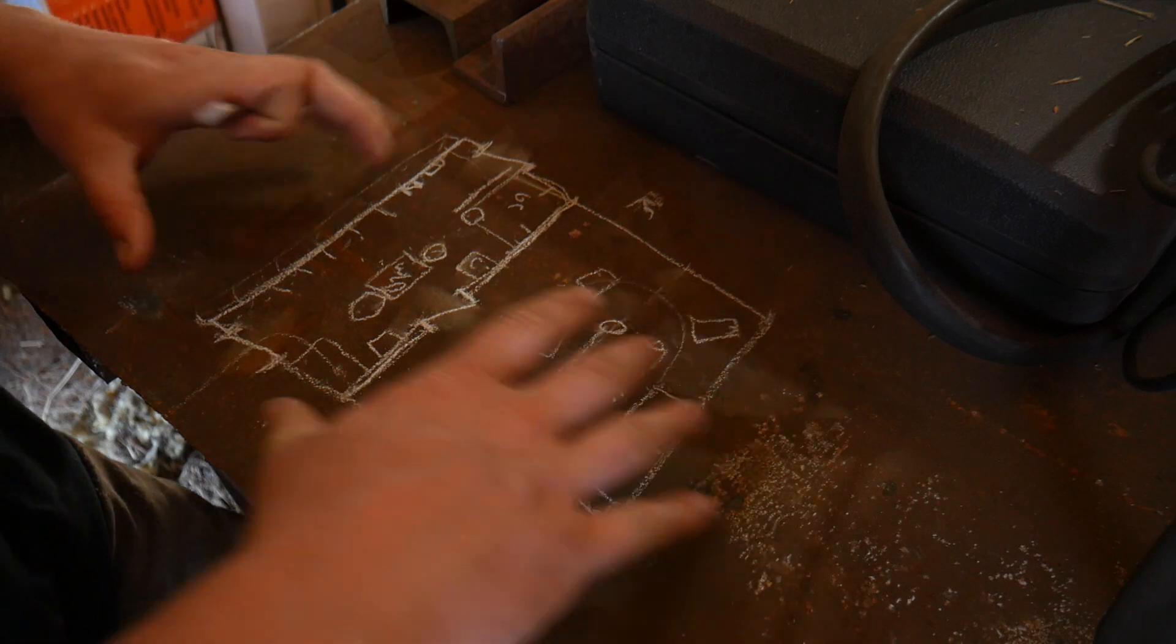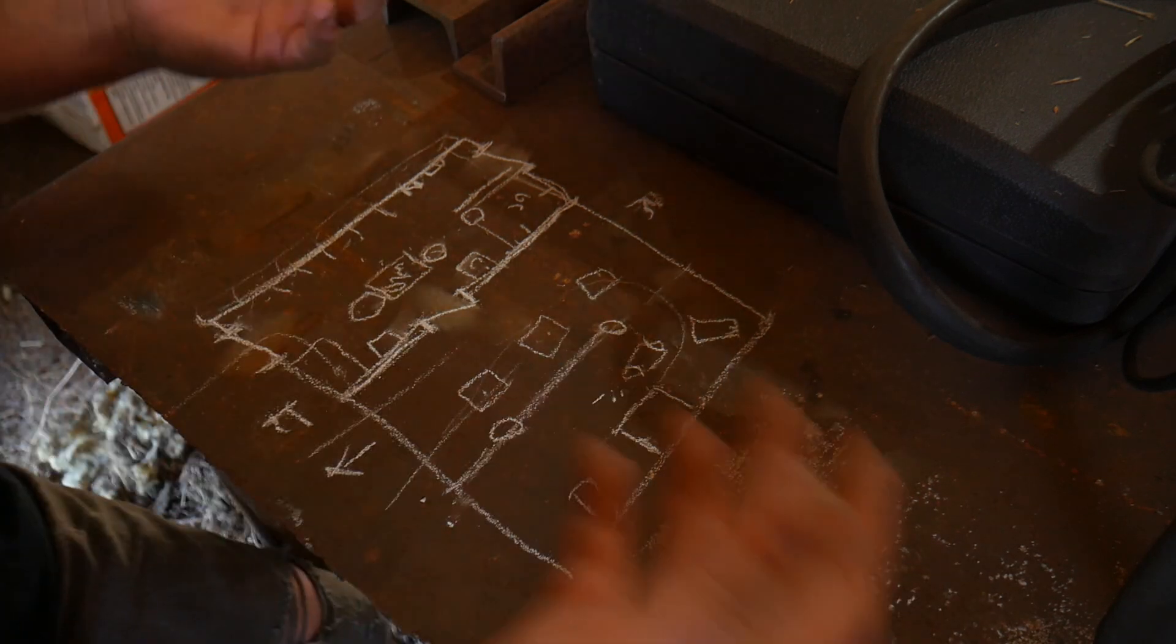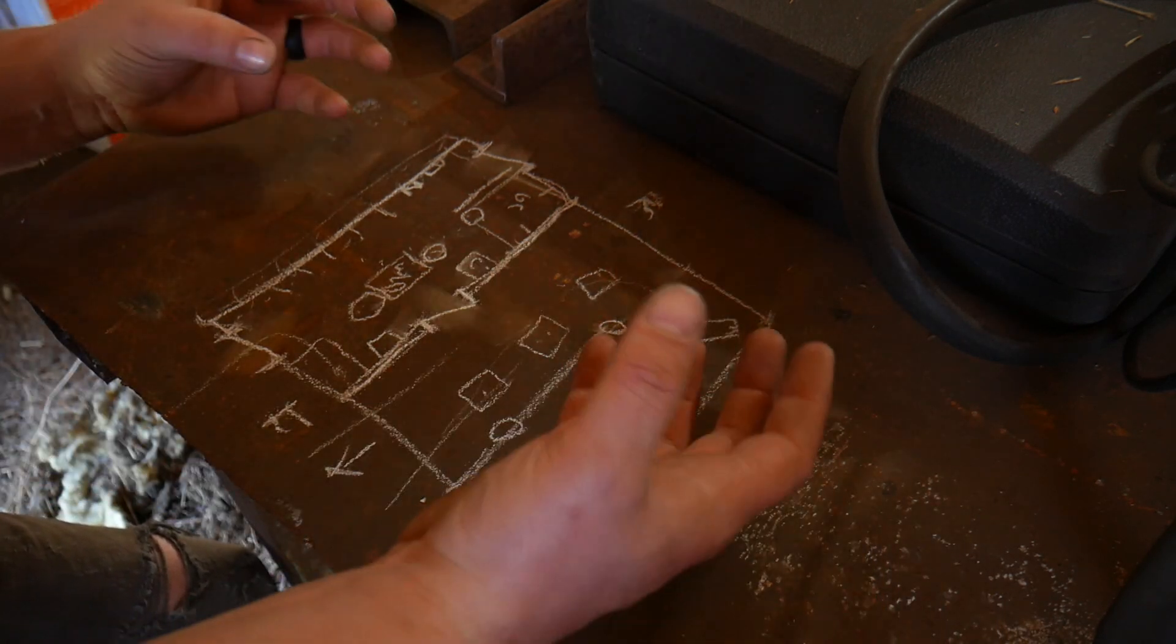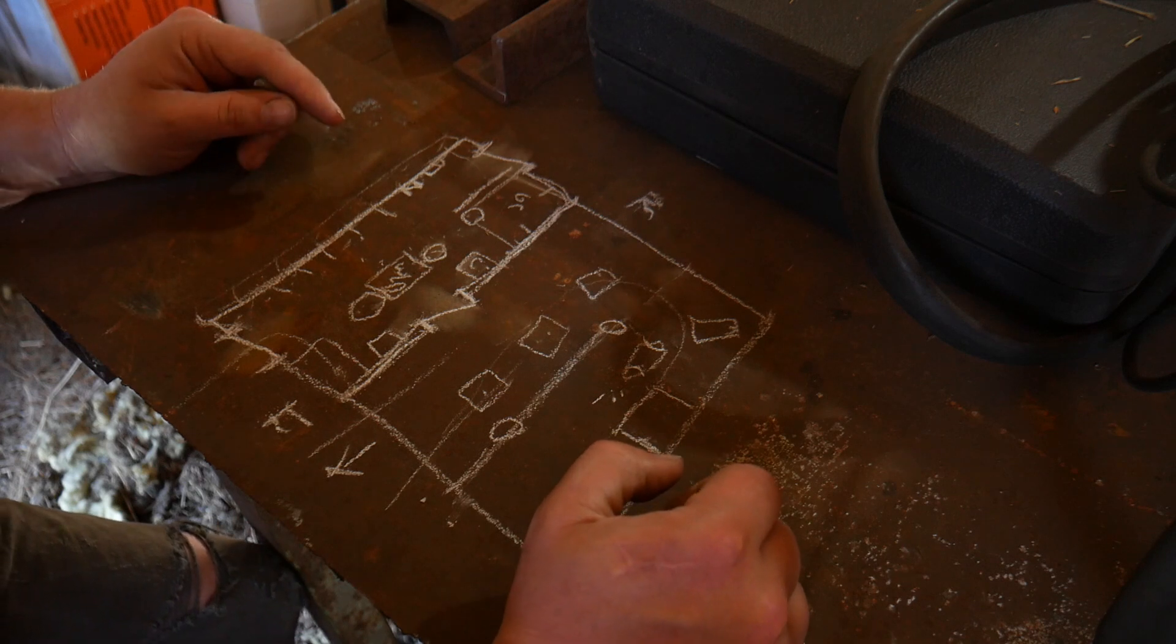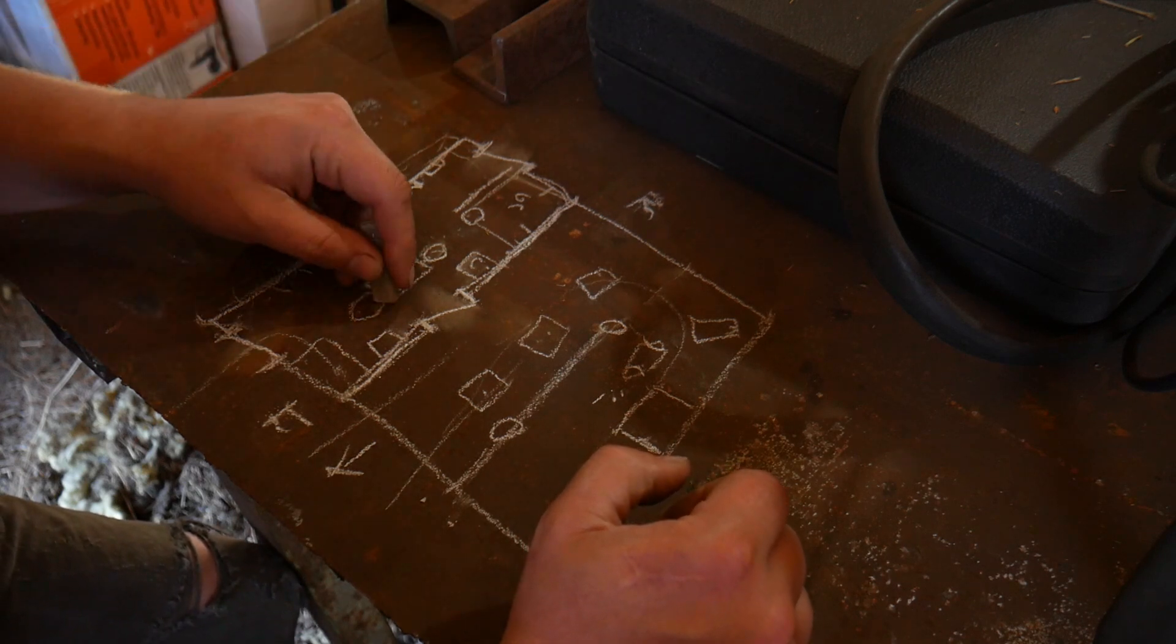That's kind of the basics of the layout. We started with a good point here. Now the next step is basically to get this place cleaned up and ready to go to work. There you go, there's the long-winded version of how you make out a shop plan.